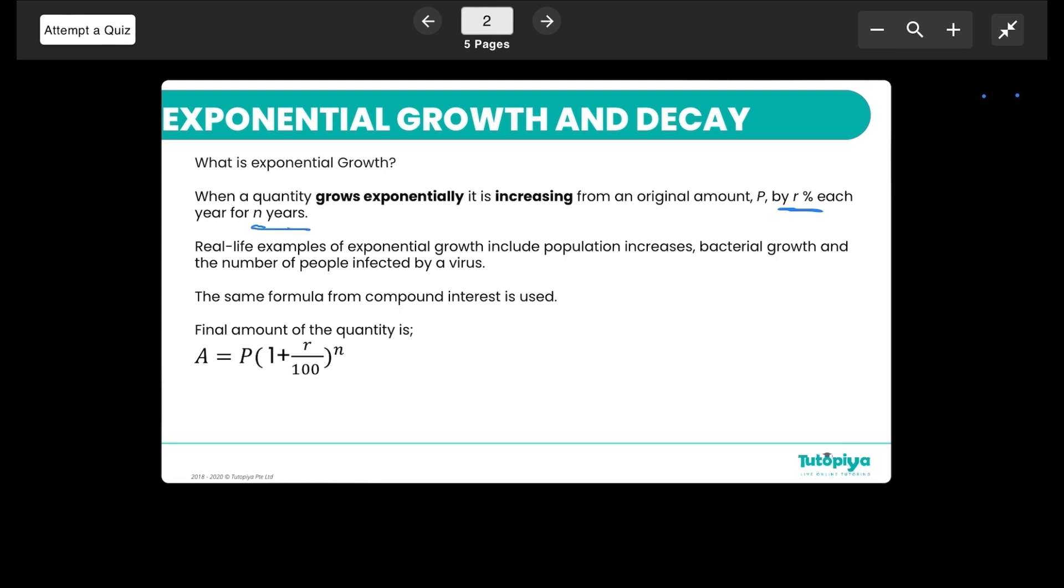Real examples when we talk about exponential growth include how the population increases. It rapidly goes up. Same way bacterial growth multiplies very quickly and even infection by a virus. First the virus comes in and then within a few seconds it infects our cells and then there are multiple viruses in our body.